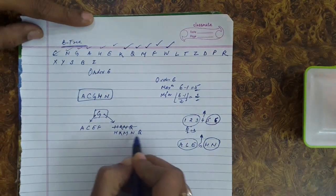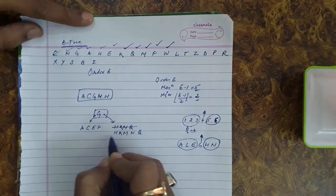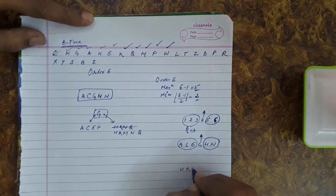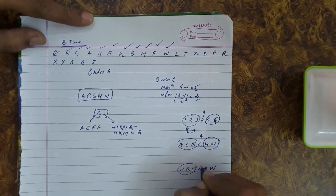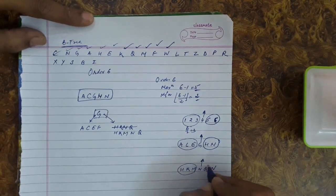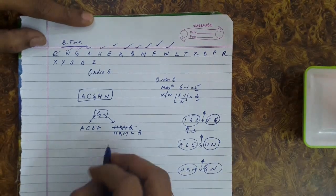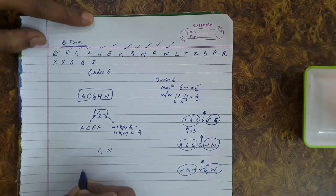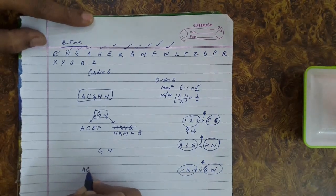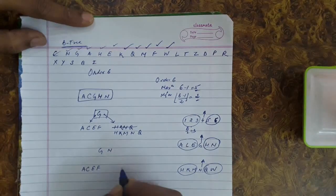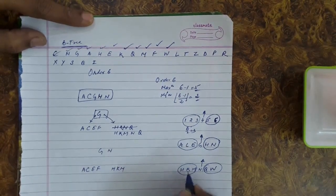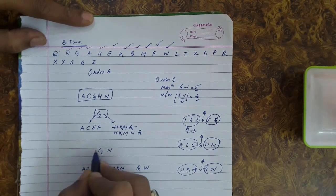If we insert W, the maximum condition will get violated again. The node becomes H, K, M, N, Q, W. m/2 = 3 keys are retained on the left side, the median key N is sent upwards, and a new node is created with Q and W. The tree root now has G and N, with left child A, C, E; middle child H, K, M; and right child Q, W.